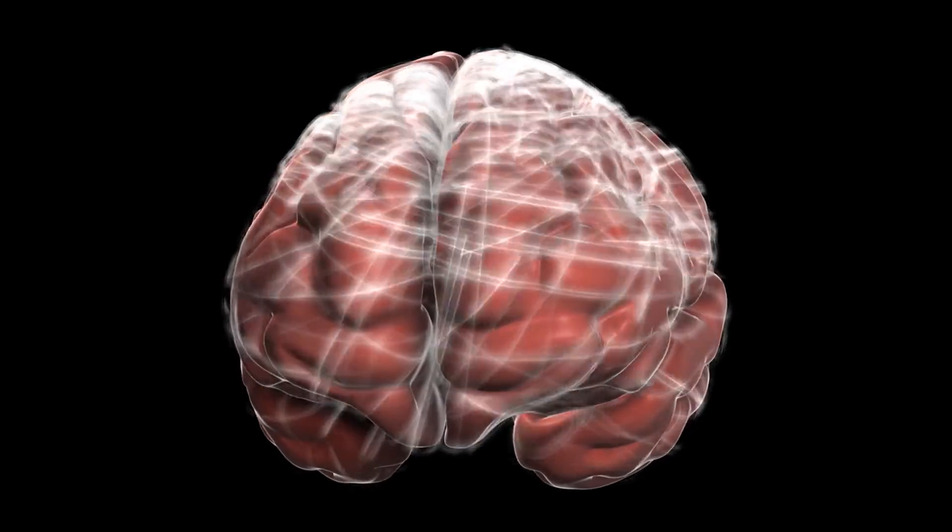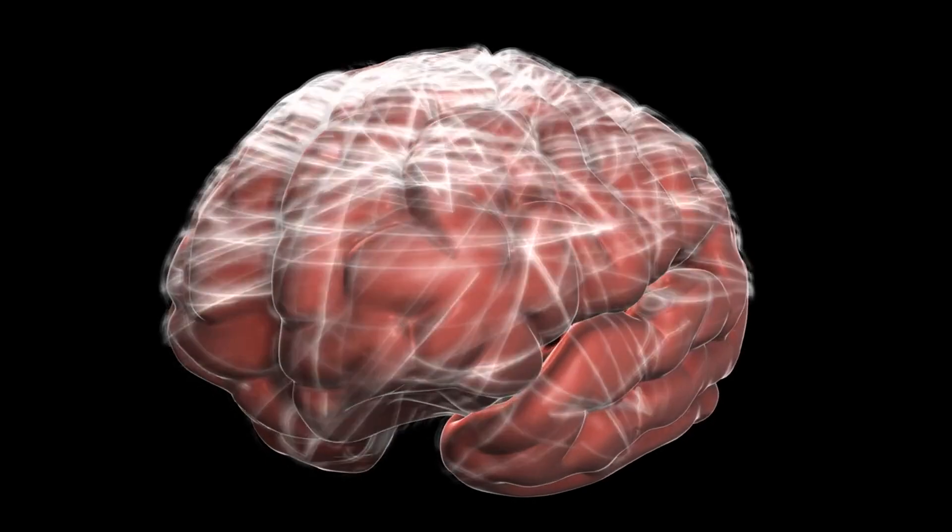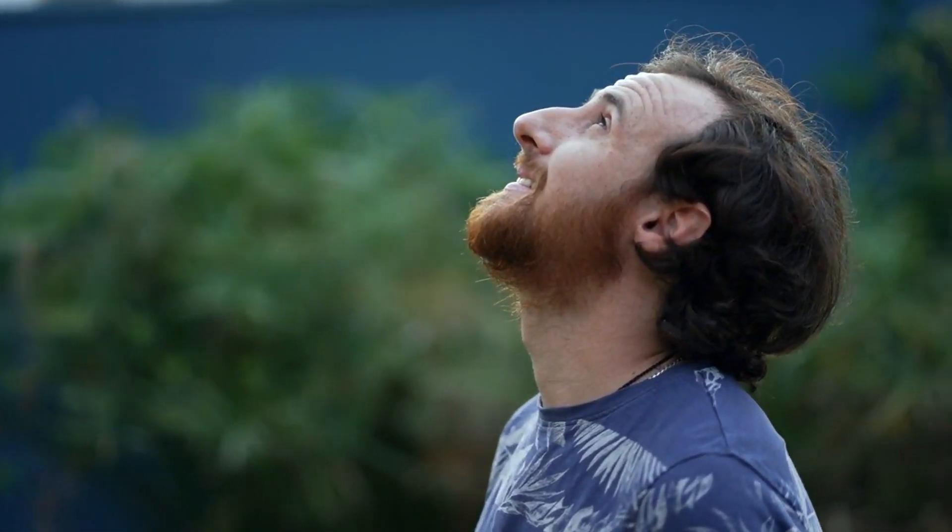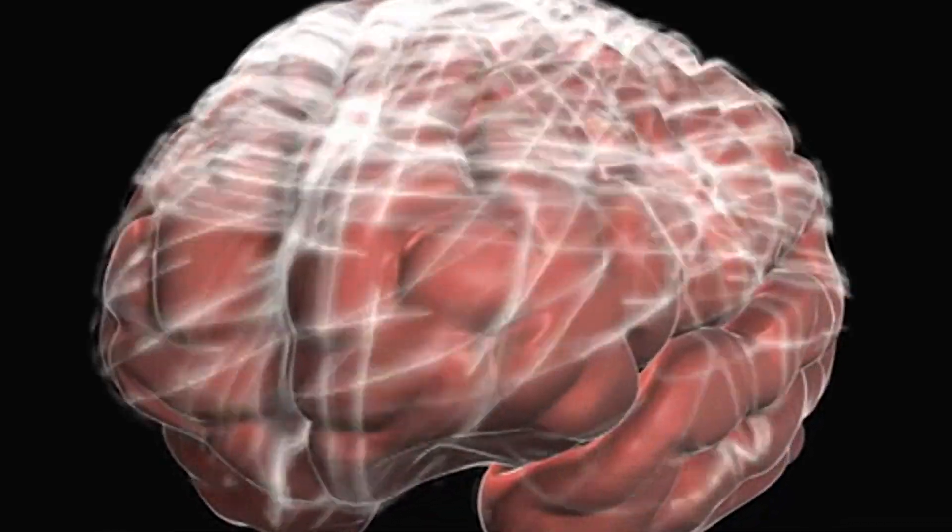And here's a fun activity. Try to identify the different functions of your brain's lobes as you go about your day. When you're making a decision, think about your frontal lobe. When you're enjoying a beautiful view, thank your occipital lobe. This can help you connect with the incredible machinery inside your head.